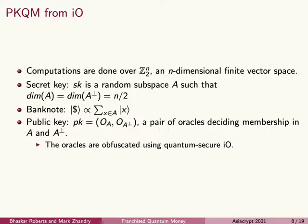Now I'll summarize the construction of public-key quantum money from IO. The banknote will be an n-qubit string, and we'll treat each classical eigenstate as a vector in Z2 to the n — an n-dimensional finite vector space. The secret key will be a random subspace of Z2 to the n, called A. A has dimension n over 2, as does A-perp, the orthogonal complement. The banknote is a uniform superposition over all the elements of A — we call this a subspace state. Subspace states have a nice property that if you take the quantum Fourier transform of the state, you get another subspace state back — in particular, a uniform superposition over A-perp.